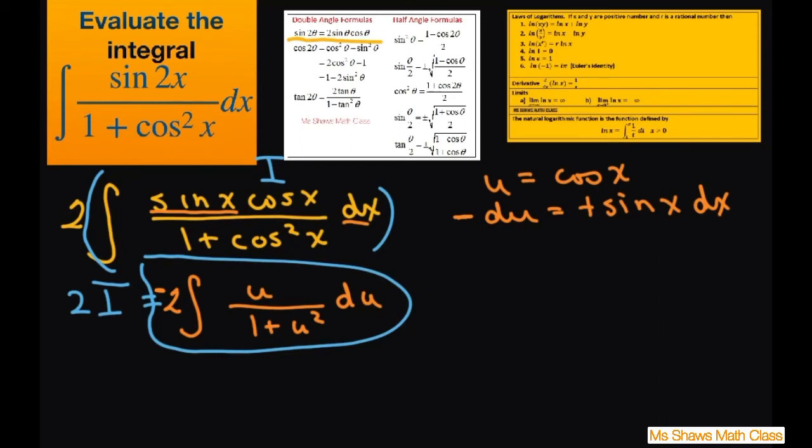This is going to equal negative 2 times, and you're going to look at this denominator. This is ln of 1 plus u squared. And then you have to put this 1 half in front. And think about if you integrate, let's look at this again.